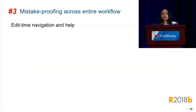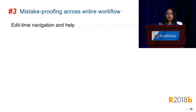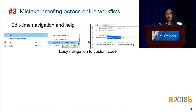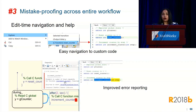The final part of our strategy is to support mistake-proofing across the entire model-based design workflow. The first step in this process is to provide edit-time navigation and help while you're editing your model. In 18b we're shipping this feature to support easy navigation to custom code right from your Simulink model. In addition, we've improved error reporting when you have incorrect usages of C functions in your Simulink model.